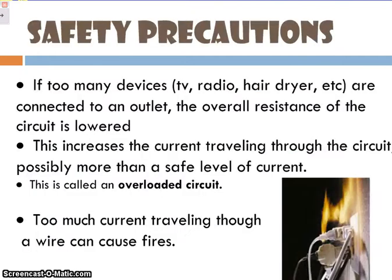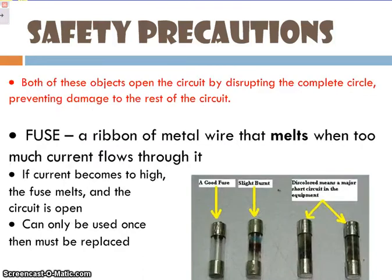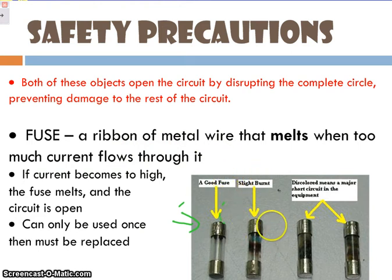Let's talk about safety precautions when dealing with electricity. That picture right there is absolutely terrible — plugging in all of those things creates a really high current traveling through the same circuit, resulting in an overloaded circuit, which is a potential fire hazard. So we have some precautions in everyday devices to prevent this. The first is a fuse — you may have seen these, they're used in cars a lot. It's a rivet of metal, and the wire within it melts when there's too much current. Here's what a good fuse looks like, here's a slightly burnt one, and then here are blown fuses — these prevent fire hazards from occurring.